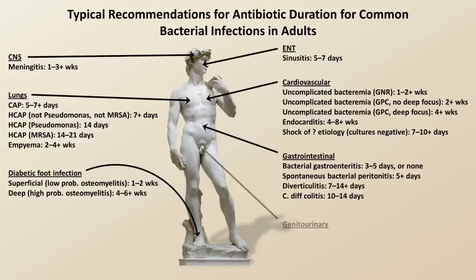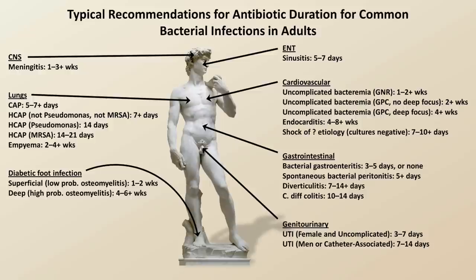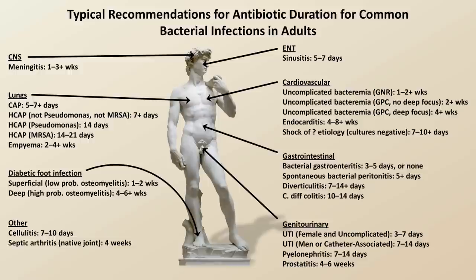Within the GU system: an uncomplicated UTI in a female gets three to seven days, on rare occasions treated with a single dose; a UTI in men or a catheter-associated infection in either sex gets seven to 14 days; pyelonephritis, seven to 14 days; and acute prostatitis gets a surprisingly long four to six weeks, as a consequence of suboptimal prostatic penetration of many antibiotics and the potential for forming micro-abscesses in the prostatic tissue. Finally, in the other category: cellulitis, seven to 10 days; septic arthritis in the absence of hardware, four weeks; and osteomyelitis in the absence of hardware, six or more weeks.